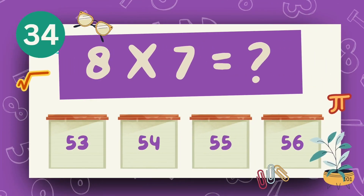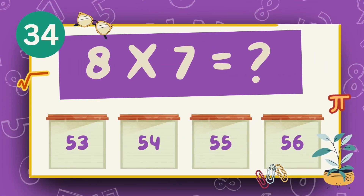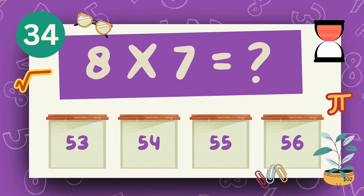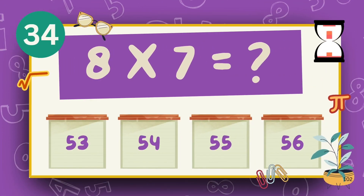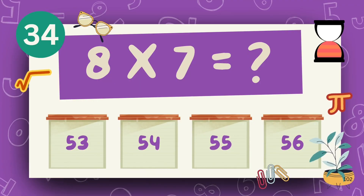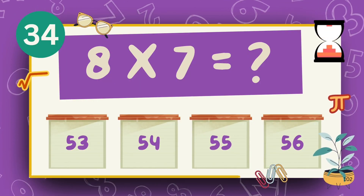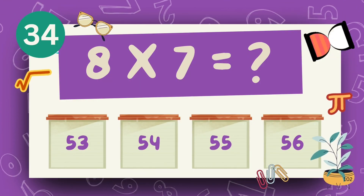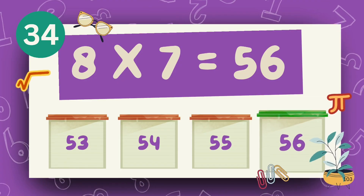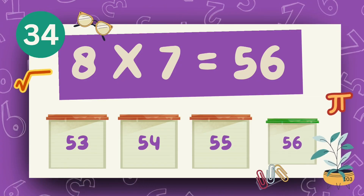What is 8 times 7? What is 9 times 7? The answer is 56.